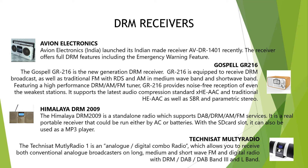The Gospel GR216 also supports SBR and parametric stereo. The Himalaya DRM 2009 is a standalone radio supporting DAB, DRM, AM, and FM services — a truly portable receiver that can be run on AC or batteries, with an SD card slot and MP3 player functionality. The Technisat Multi-Radio is an analog-digital combo radio allowing reception of both conventional analog broadcasting on long wave, medium wave, short wave, and FM, and digital radio including DRM, DAB Band 3, and L-band.